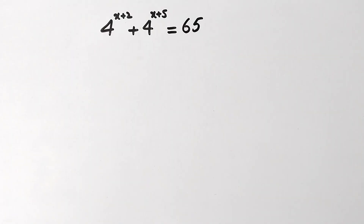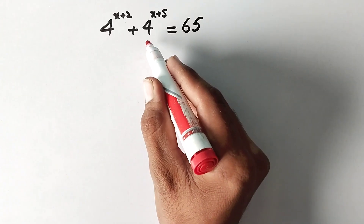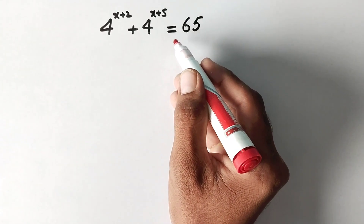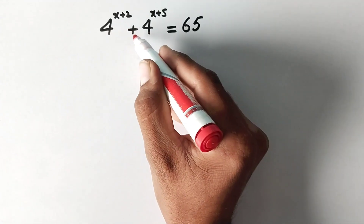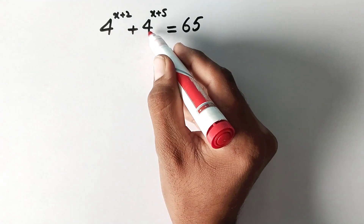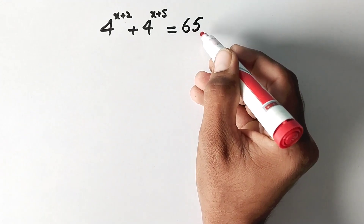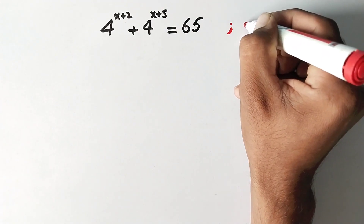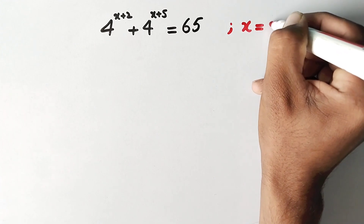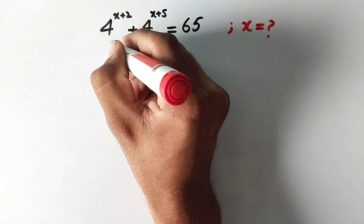Hello everyone and welcome to Explored Maths. Today we have to solve this exponential problem: 4 raised to power x plus 2, plus 4 raised to power x plus 5, is equal to 65. We have to find the value of x. Let us see the solution.